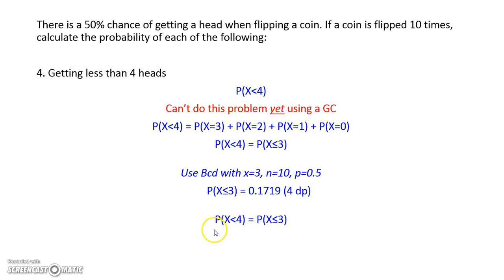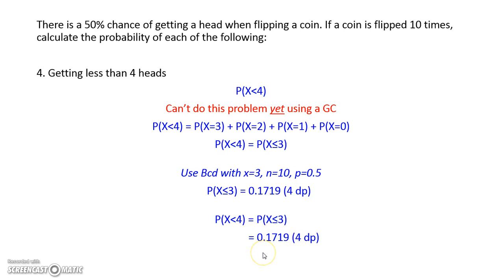So the probability of x being less than 4 — getting less than 4 heads — can be rewritten as the probability of x being less than or equal to 3, giving our final answer of 0.1719 to four decimal places.